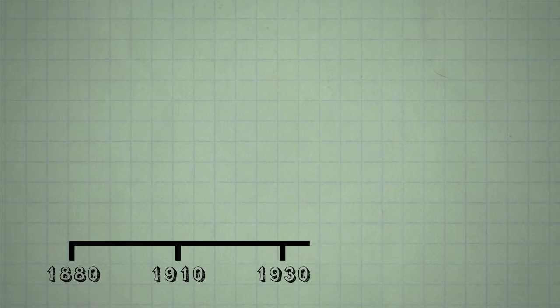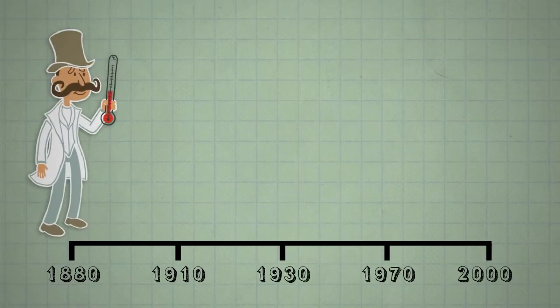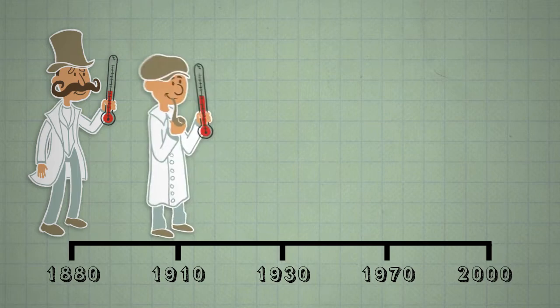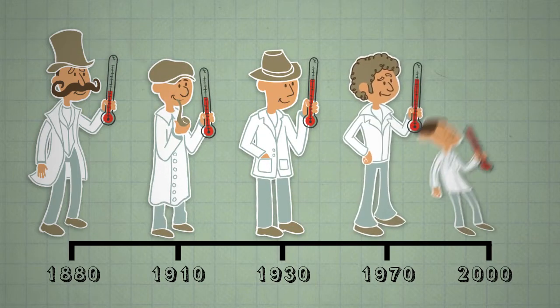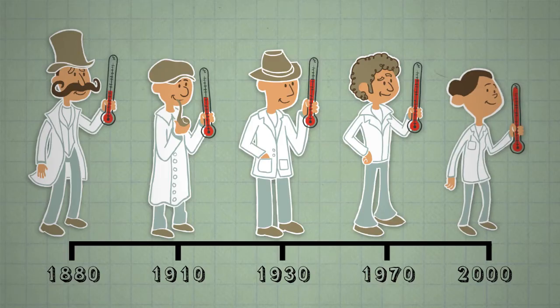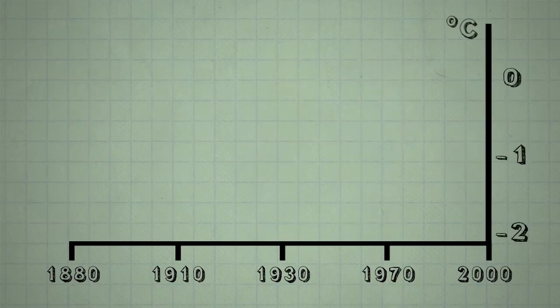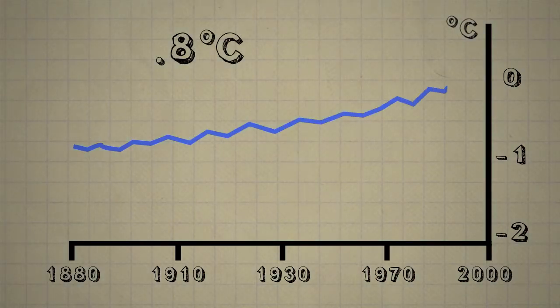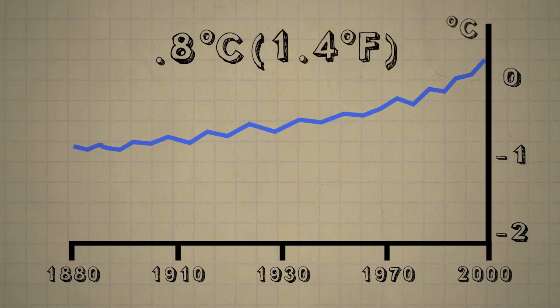Scientists also study the Earth's more recent temperature changes. In 1880, people started recording the temperature all over the world. So we have a clear picture of how much the Earth, on average, has warmed since then. As you can see, between 1880 and 2000, Earth's average air temperature rose about 0.8 degrees Celsius. That's about 1.4 degrees Fahrenheit.